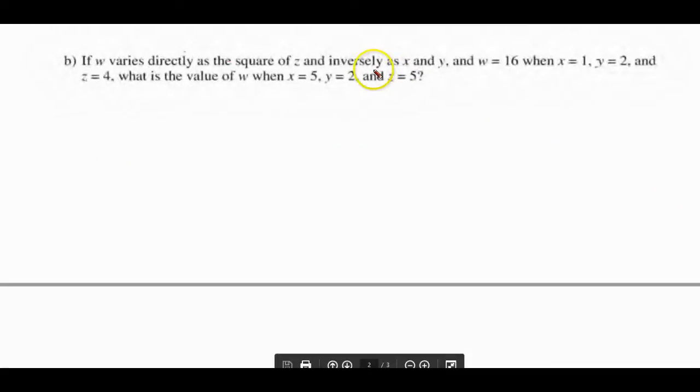In your practice and quiz me's, you'll be getting a variety of questions. Here, we're just giving you the general pattern of how to solve it. Here they're saying W varies directly, so we have to put the K in, directly as the square of Z, so Z squared, and inversely as X and Y. We put that X and Y down there. This is our general formula. This one has some direct variation and some inverse or indirect variation. The K is always up there.